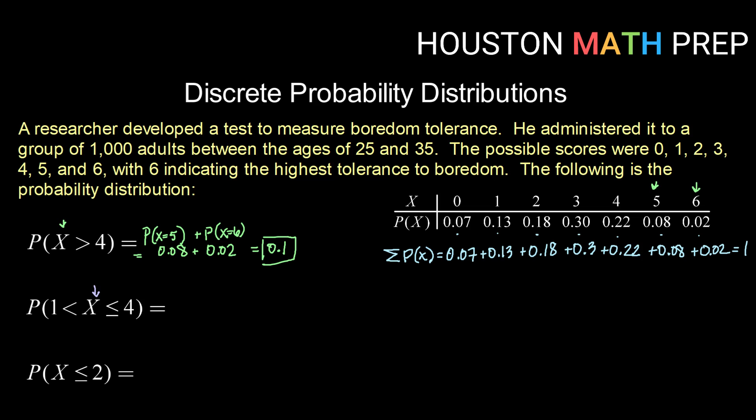So strictly greater than 1 would include 2, 3, and since we are less than or equal to 4, we'll also include 4. So this is the probability of 2 plus the probability of 3 plus the probability of 4. So that is 0.18 plus 0.30 plus 0.22. Adding those all up, I get 0.7.